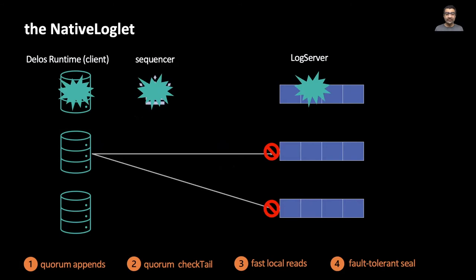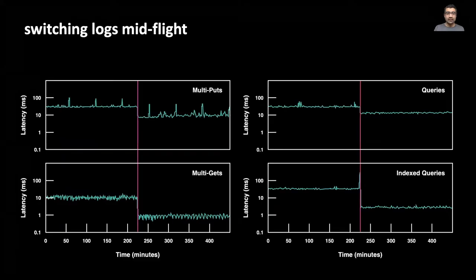If the server running the sequencer fails, the native loglet is wedged. Any client can now seal the native loglet by sending a seal command to the quorum. The seal is idempotent. Multiple clients can seal at the same time. Note that the native loglet as described is converged. The log servers run on the same machines as the Delos runtime. But the native loglet can also be disaggregated running on entirely different machines. In production, we use the native loglet in converged mode.